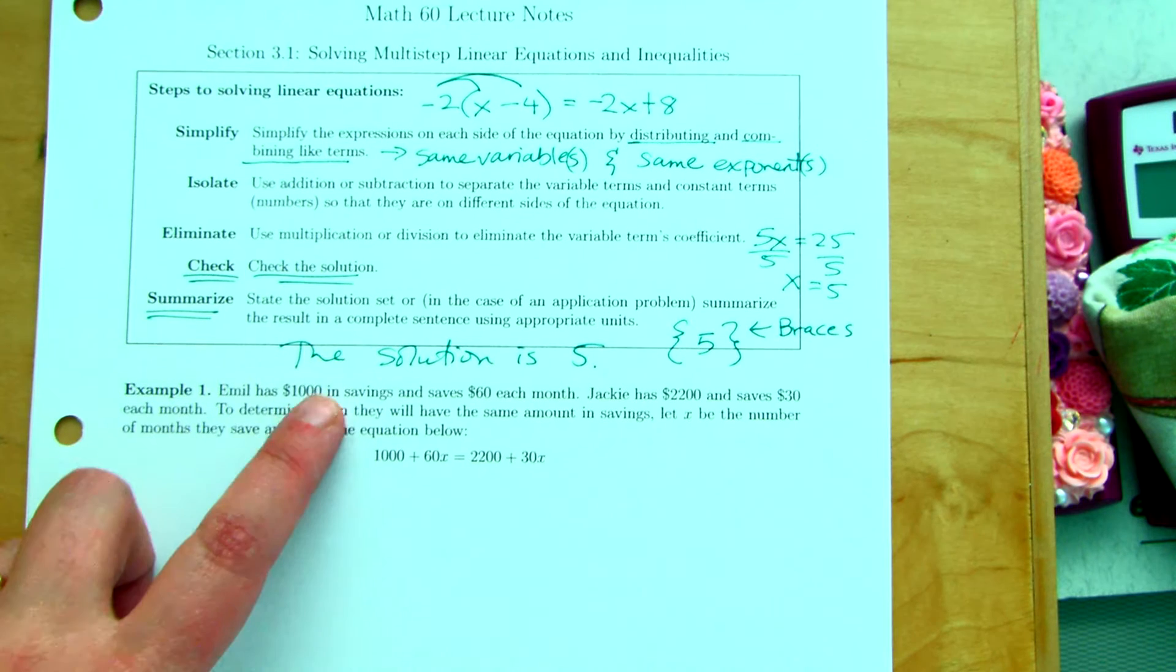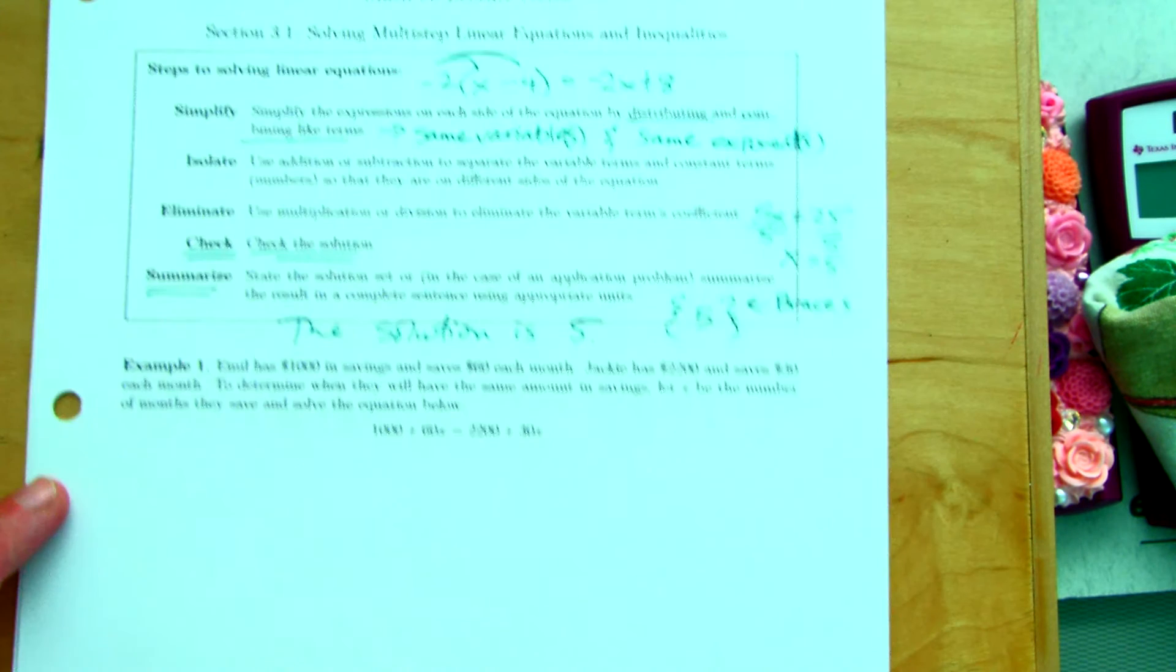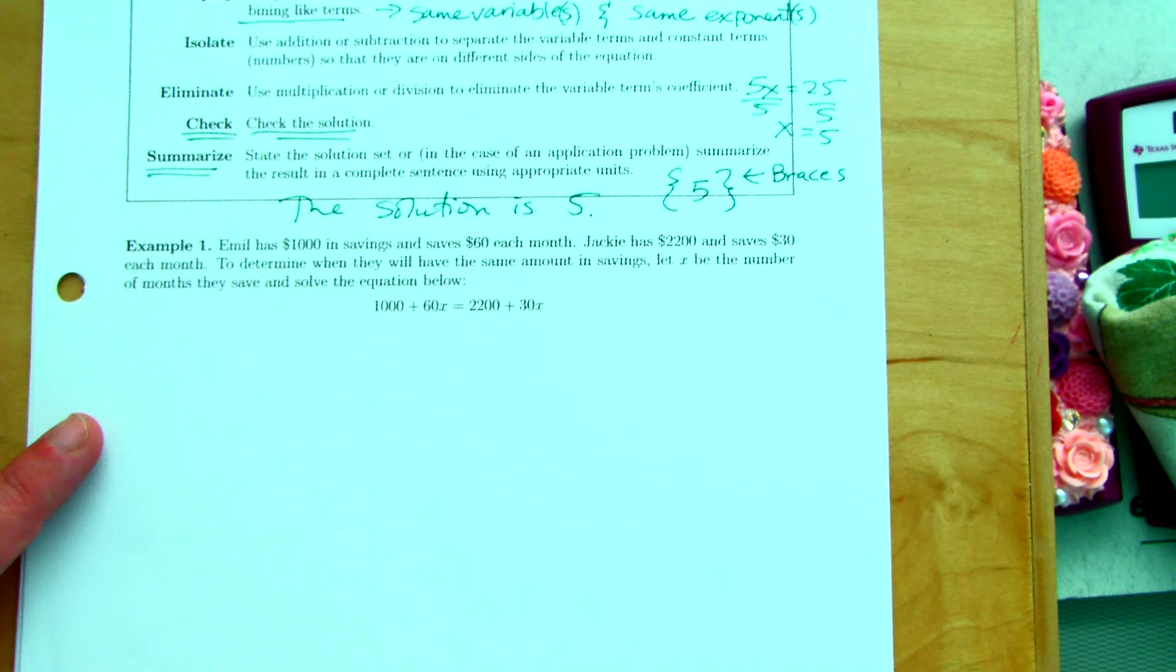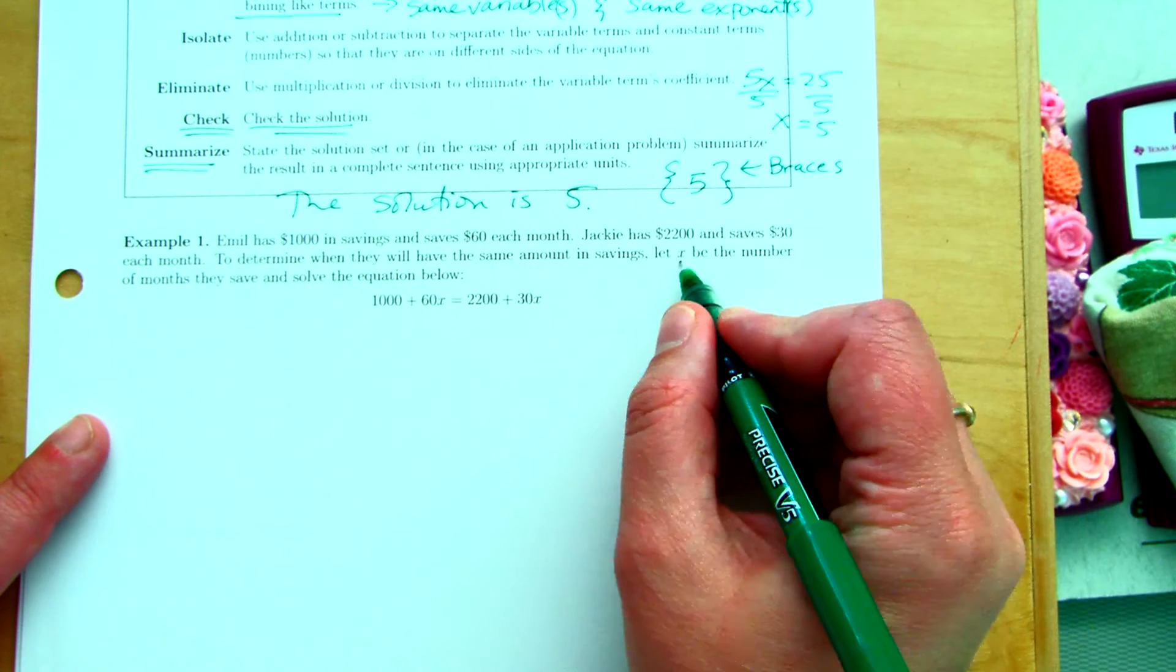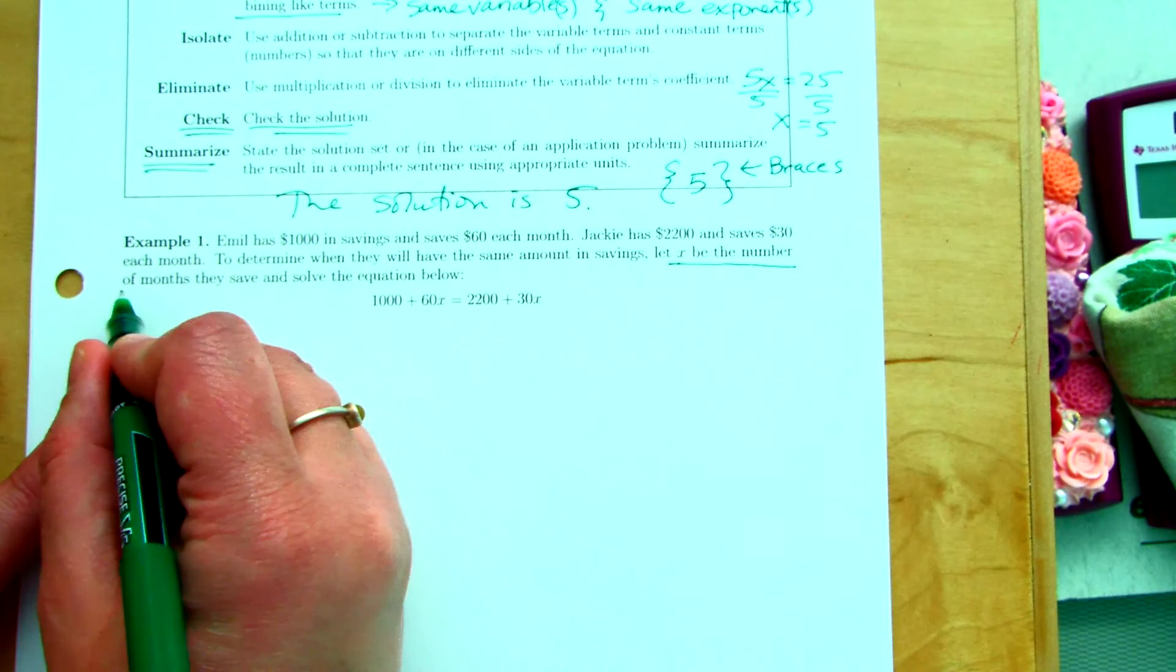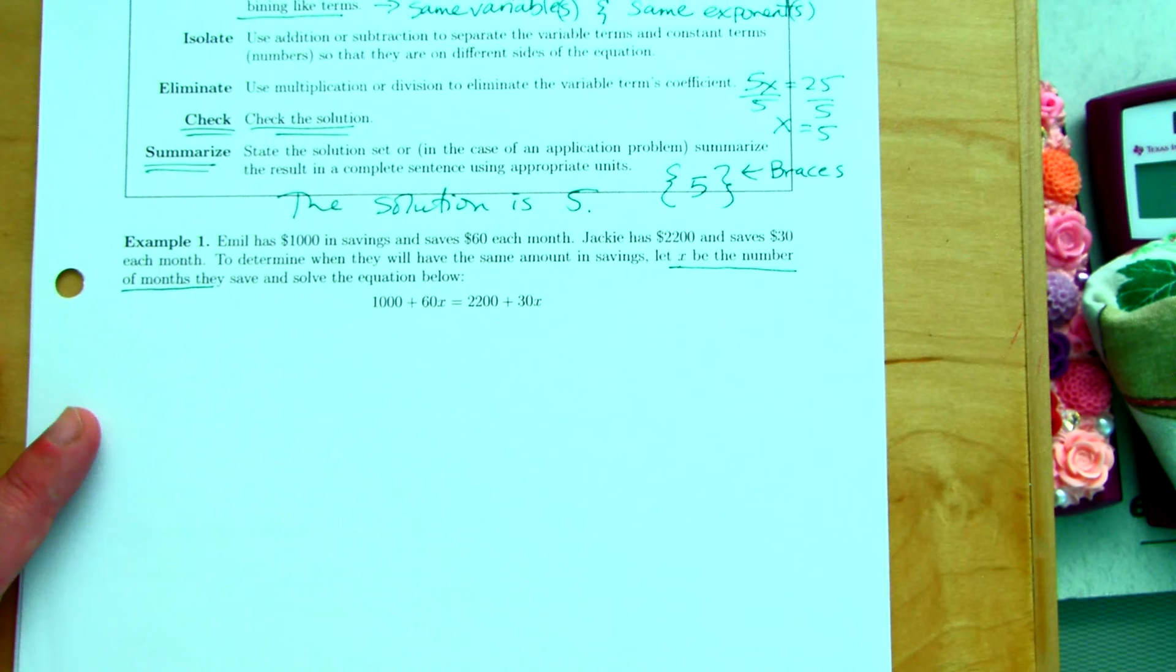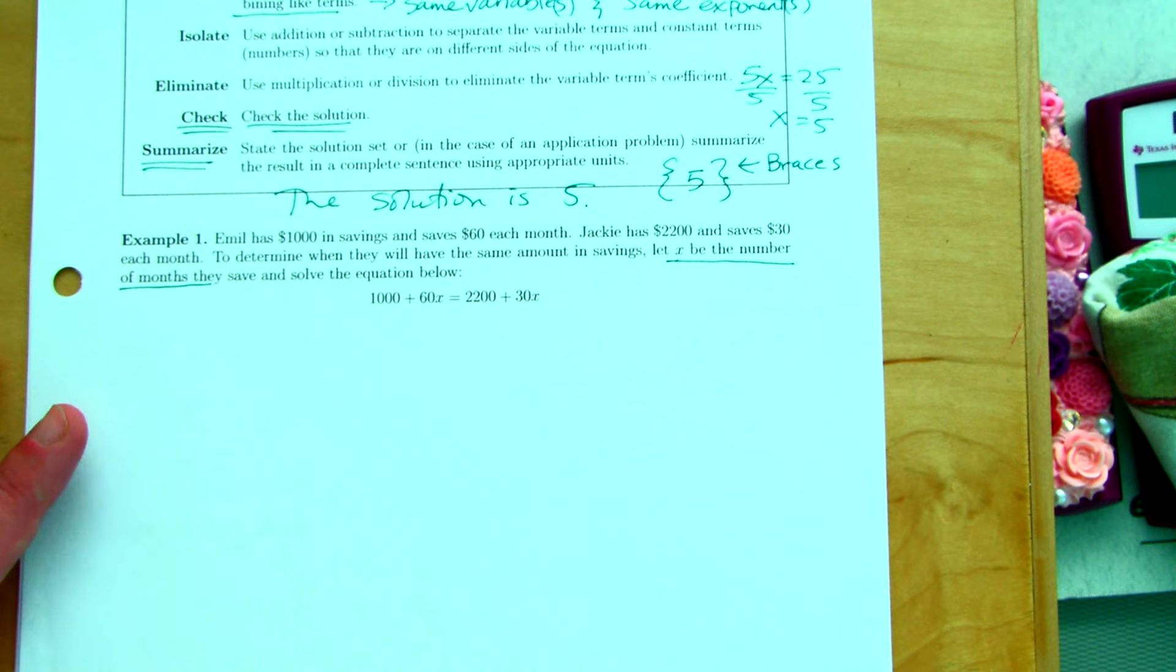And it's only for when we solve equations. That's partly why I'm suggesting we do just the sentence answer. Okay, so let's read this. Emile has $1,000 in savings and saves $60 each month. Jackie has $2,200 in savings and saves $30 each month. To determine when they will have the same amount of savings, let X be the number of months that they save. What do we call that when we take a variable and we say what it means?